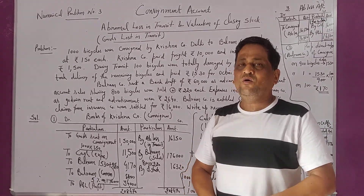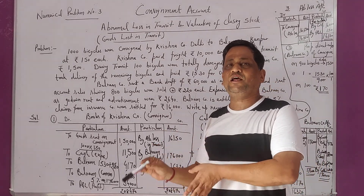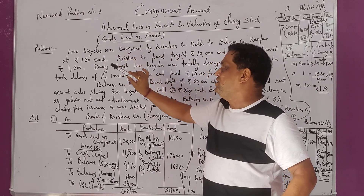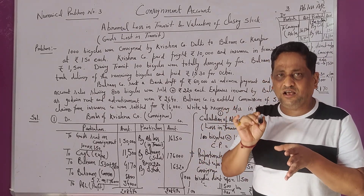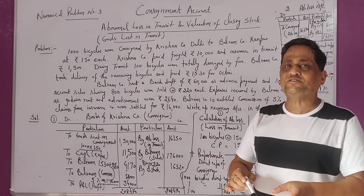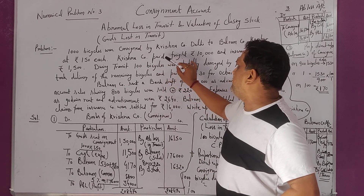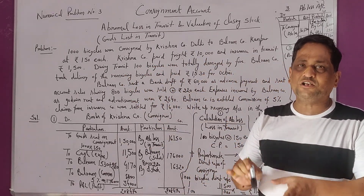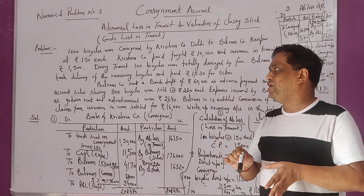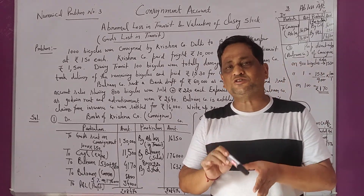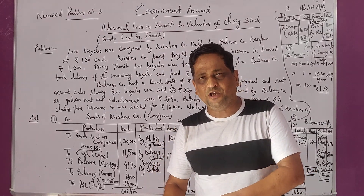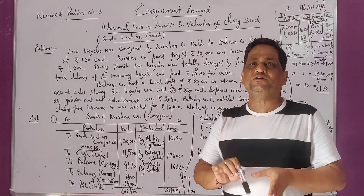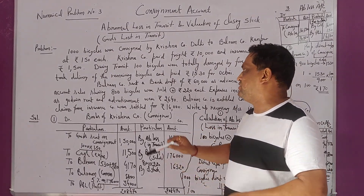Kaun bhej raha hai? Krishna bhej raha hai, aur Krishna ko hum consignor kahenge. Aur jisko bheja ja raha hai, Balram Company, unko hum kahenge consignee. Jab bhi hum goods sent on consignment karte hain, immediately after that consignor has to incur transportation expenses. Krishna Company paid freight 10,000 and insurance in transit 1,500. Consignor's all expenditures are direct expenses.